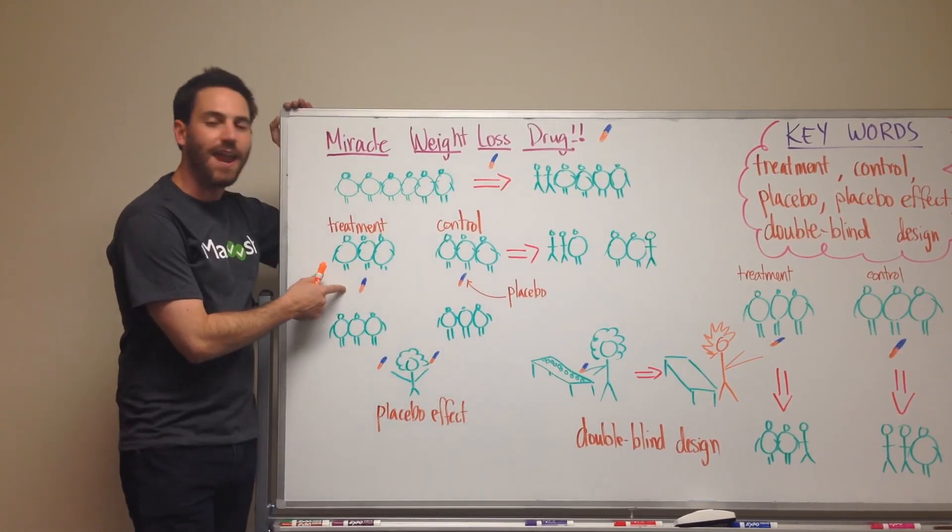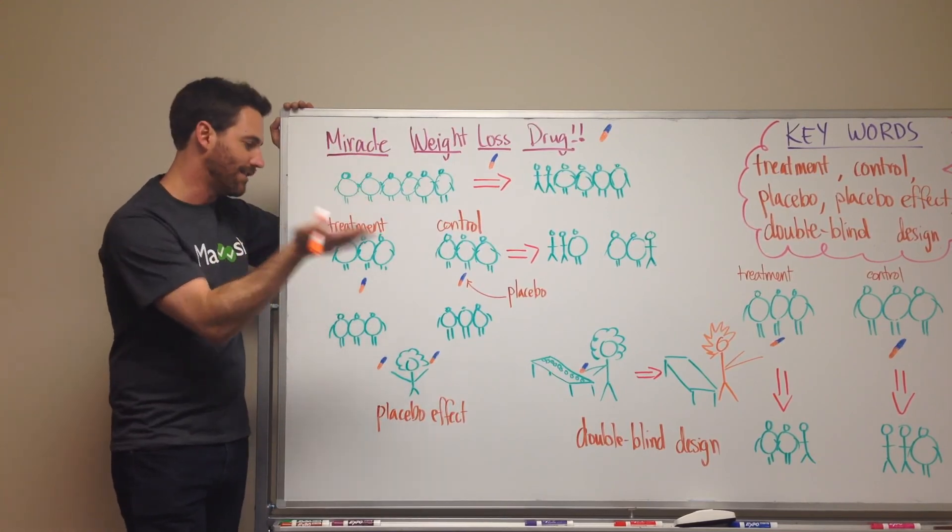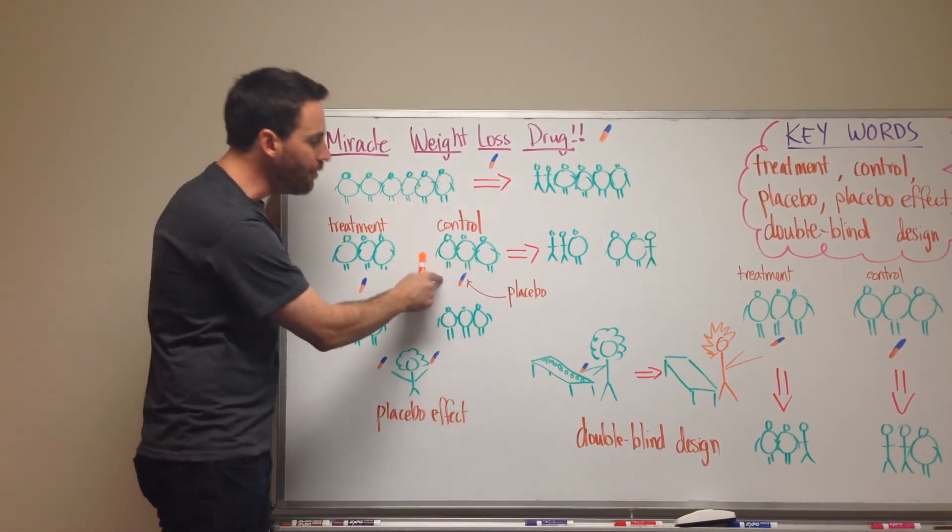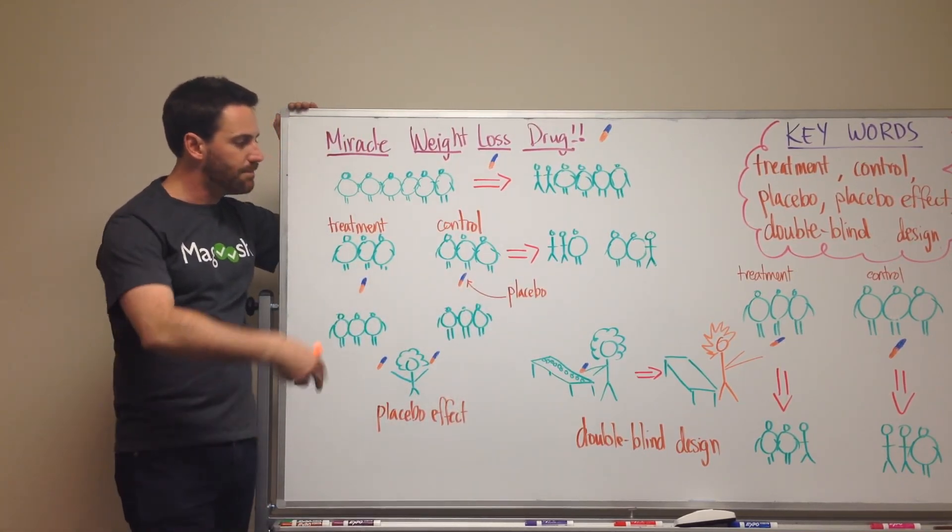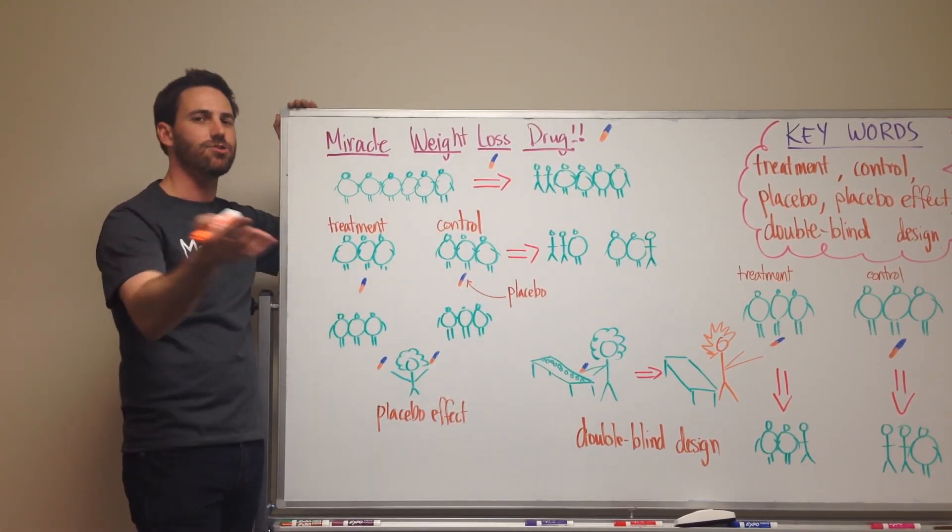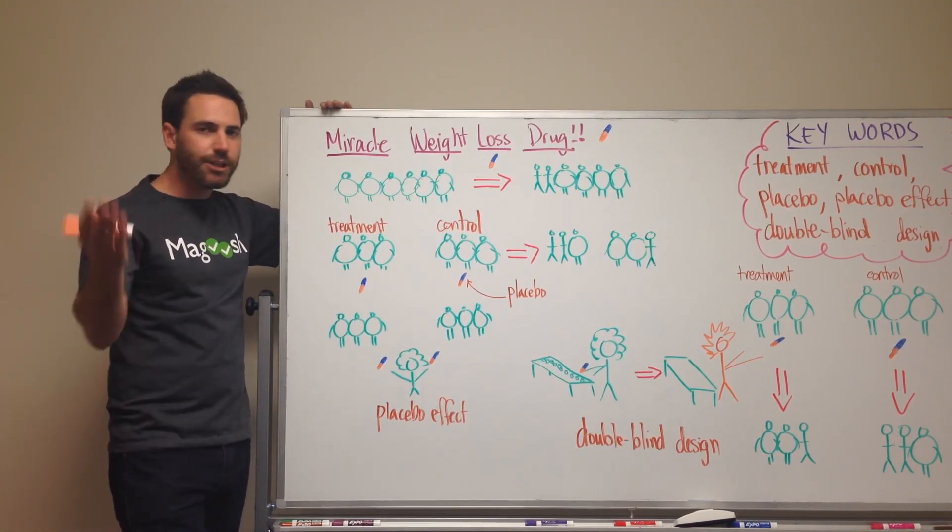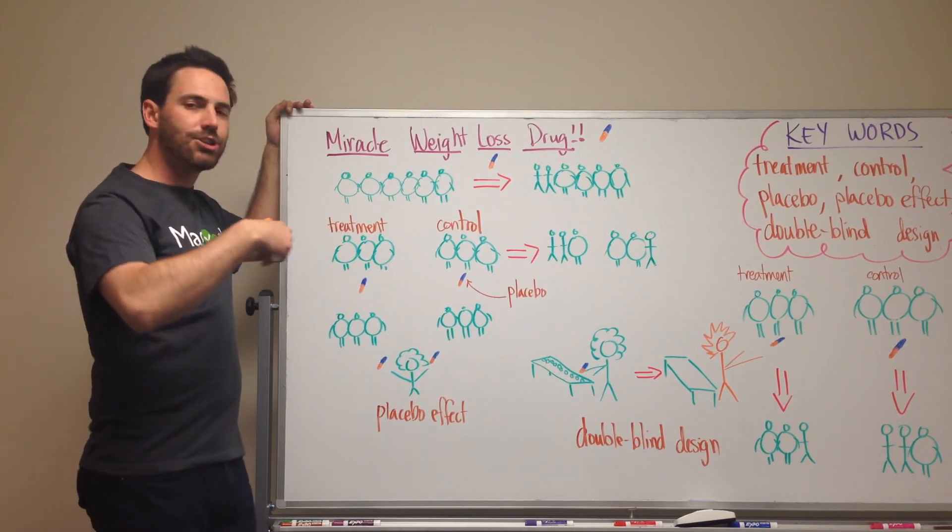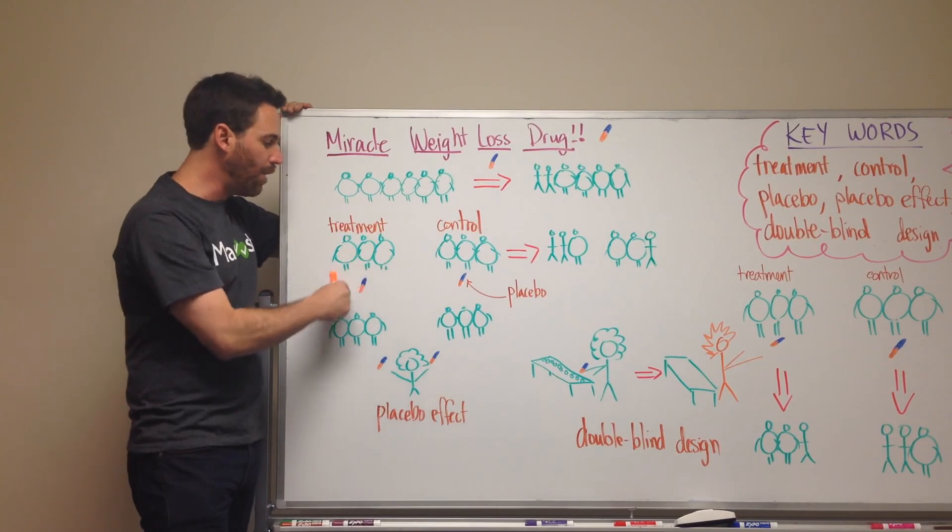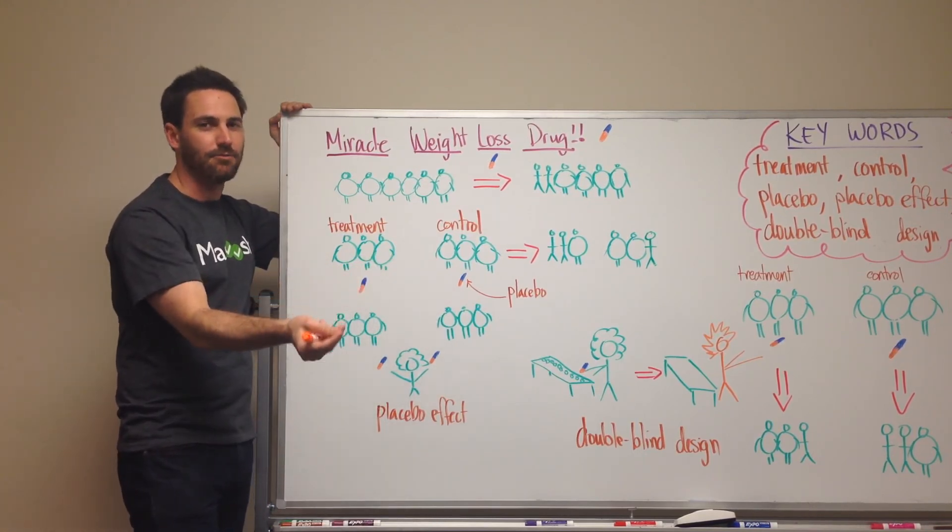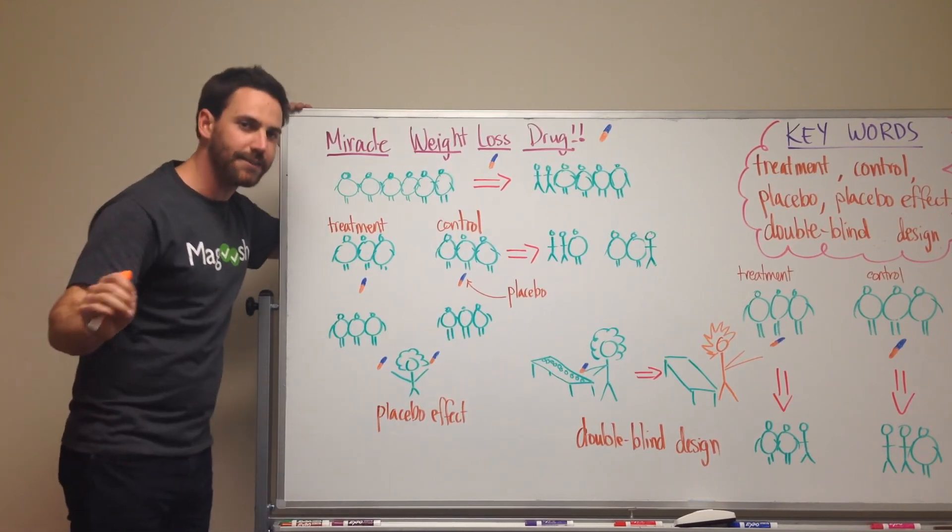And to really know if something is effective, we have to have a treatment group and a control group. So the treatment group, they get the actual drug in this case. They're going to get the miracle weight loss drug. The other group of people are going to get a placebo. And a placebo is basically a pill that does nothing. Usually it's made from sugar. And it's innocuous. It's not going to hurt you. And it's just so that you are giving a thing to another group of people. So both groups of people are getting something. One is the drug. One is not the drug.